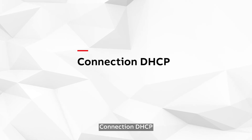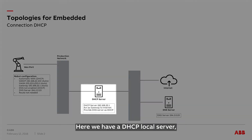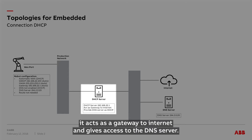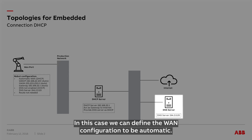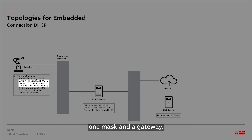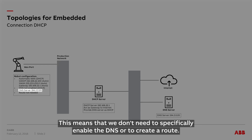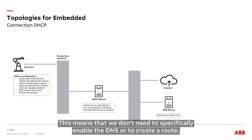Connection DHCP. Topology with a local DHCP server. Here we have a DHCP local server that acts as a gateway to internet and gives access to the DNS server. In this case, we can define the One configuration to be automatic. The robot controller will automatically receive for its One port: an IP address, mask, and a gateway, and will also automatically receive the DNS server. This means we don't need to specifically enable the DNS or create a route.